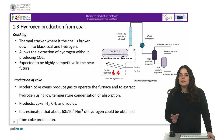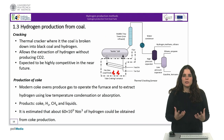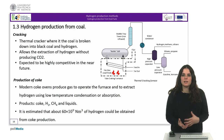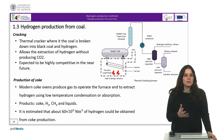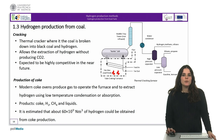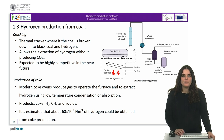In thermal cracking, coal is introduced into a thermal cracker where it is broken down into black coal and hydrogen as a fuel by-product. This process allows the extraction of hydrogen without producing CO2, and it is expected to be highly competitive in the near future compared to other processes.